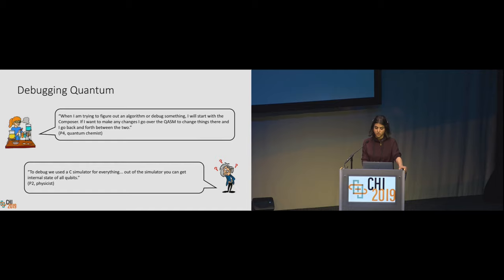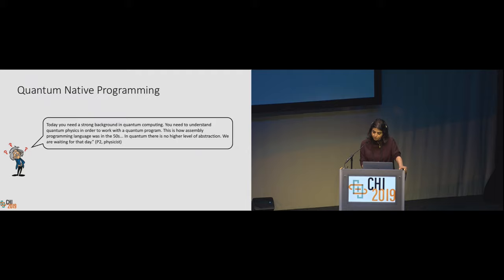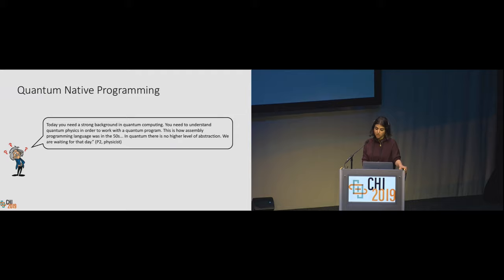The development of programming languages for quantum computers largely mirrors that of classical computers, but on a much more rapid timescale. Early quantum system programming evolved from placing quantum gates directly on a circuit to writing assembly-style code using the open quantum assembly language, QASM. But there are also newer SDKs, such as Qiskit, that rely on Python to provide a high-level abstraction, which is then translated down to the level of QASM before executing on real quantum hardware or simulation. One opportunity for HCI researchers is to consider whether the abstractions used to program classical computers should be applied for programming quantum systems.